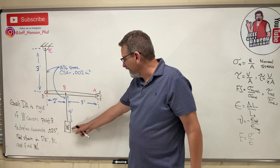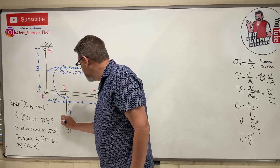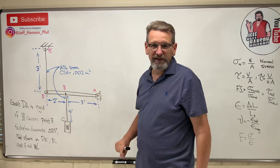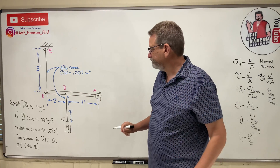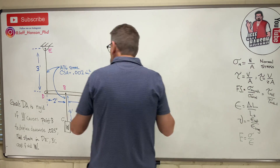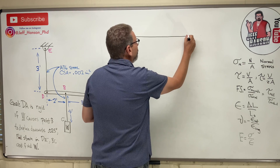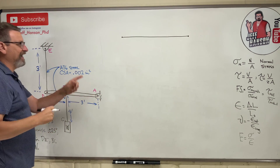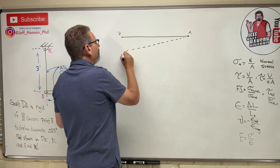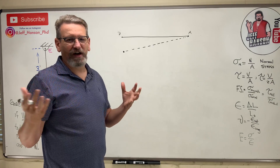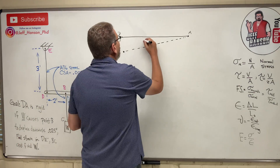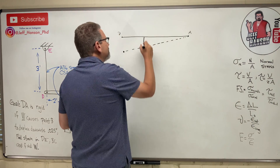We also need to find the weight W that caused the displacement of 0.025 inches. I'm going to draw that bar in its displaced position — greatly exaggerated so we can see it — because drawing the actual thickness of three human hairs isn't practical.